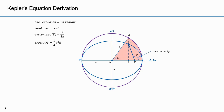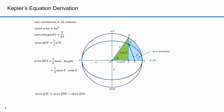Now we subtract out our first area — the triangle QOS. Subtracting QOS from QOV leaves QSV, the area in blue. The area of QOS is one half base times height. The base is A cosine E and the height is A sine E, so the area is one half A² cosine E sine E. Substituting our formulas: the area of QOV is one half A² E, and the area of QOS is one half A² cosine E sine E, so the area of QSV is one half A² times (E minus cosine E sine E).